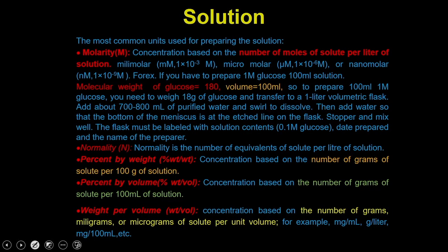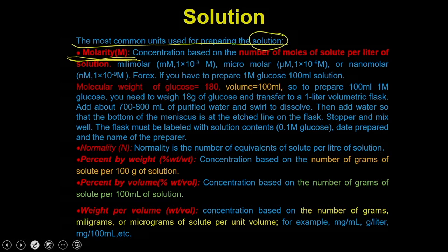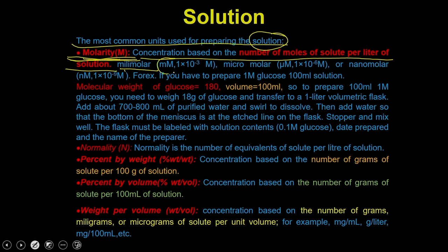You can prepare a solution in molar terms. The molarity of a solution depends on the number of moles of solute per liter of solution. It can be millimolar (10⁻³ M), micromolar (10⁻⁶ M), or nanomolar (10⁻⁹ M). Let us see how to prepare a molar solution — for example, if I ask you to prepare a 1 molar glucose solution of 100 ml. The information required is the molecular weight of the molecule.